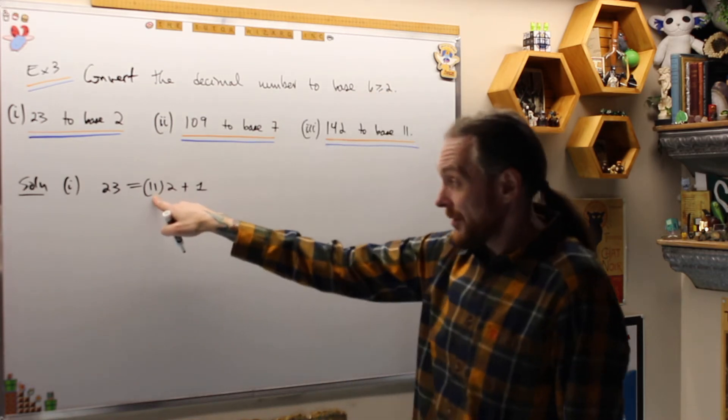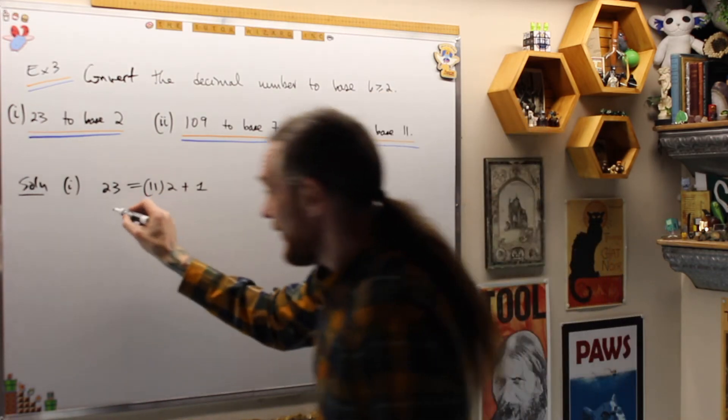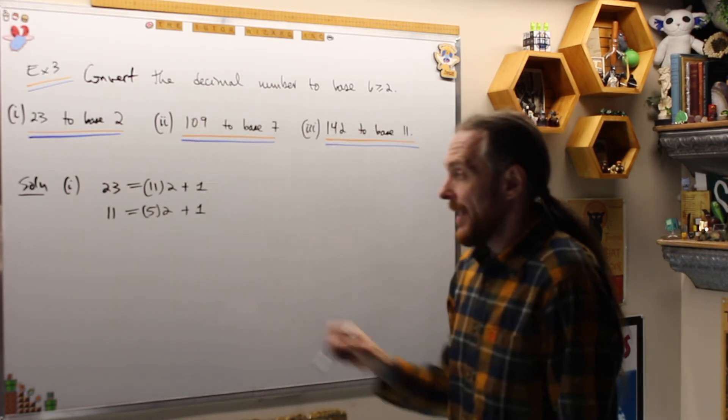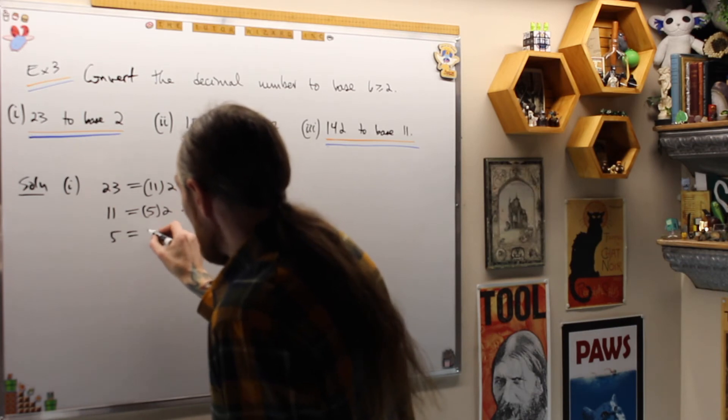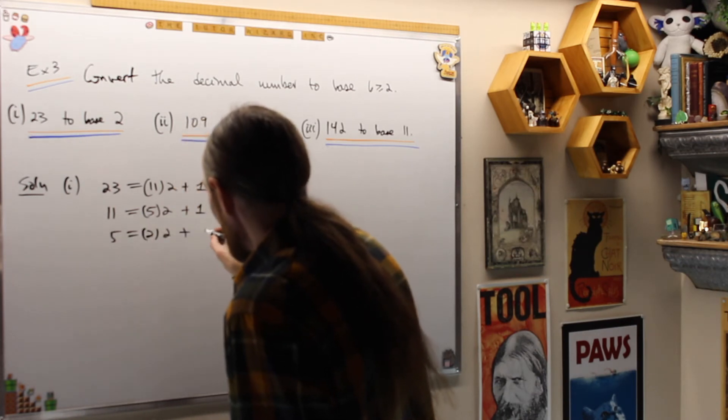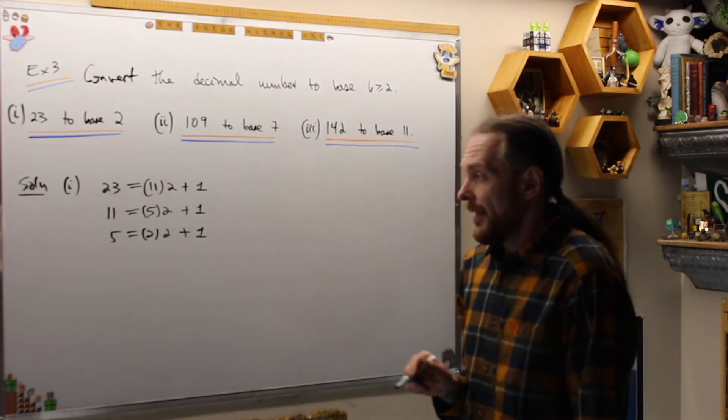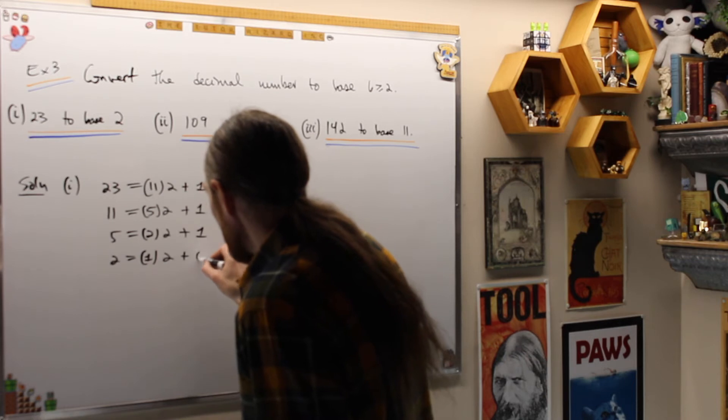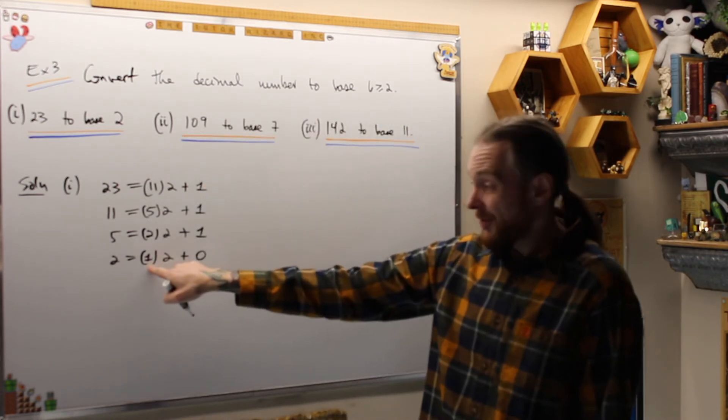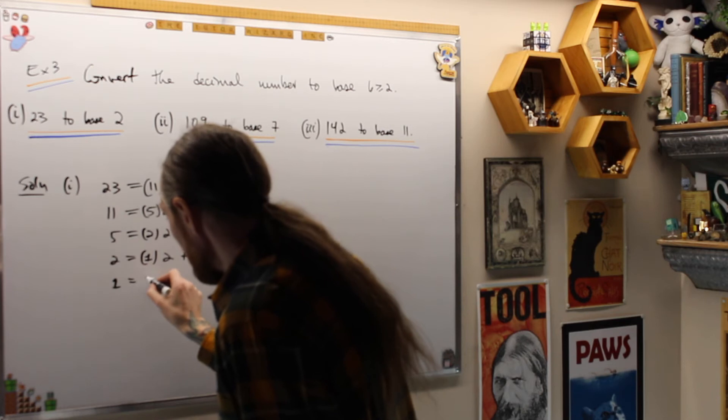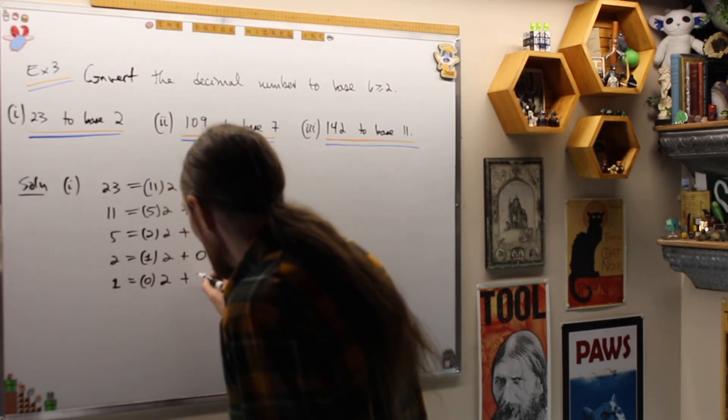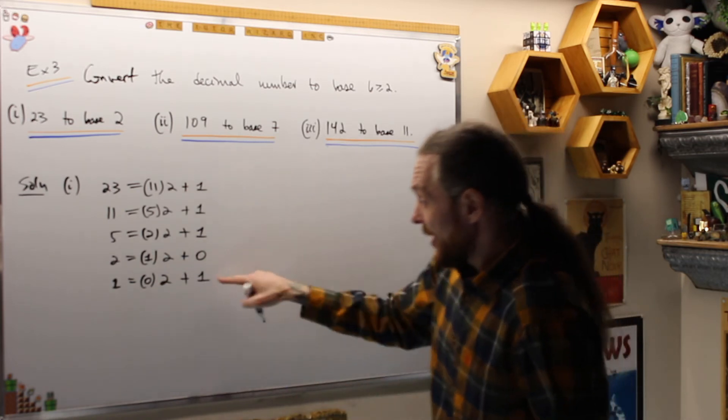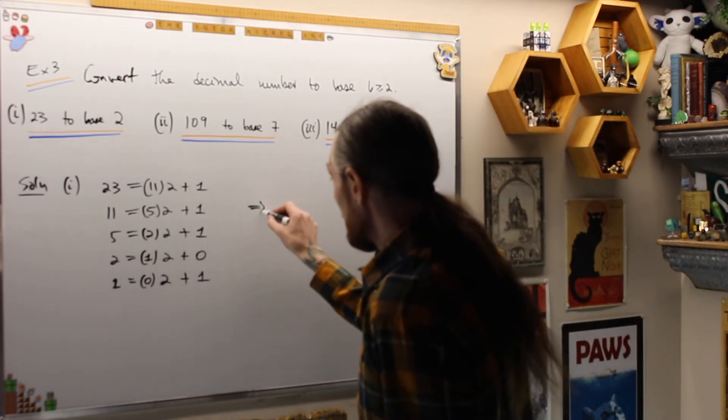Then I use the next quotient, so 2 into 11. 2 goes into 11, so 11 is 5 groups of 2 plus 1. And then I use the 5. 5 is 2 groups of 2 plus 1. And then finally, 2 is 1 group of 2 plus 0. And then this guy is finally where I can stop because 1 is no groups of 2 plus 1. Once I get a 0 quotient, I know I can stop.